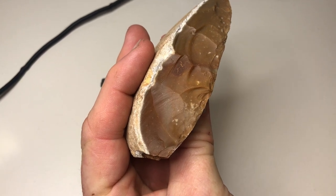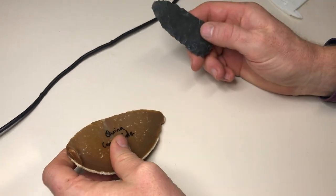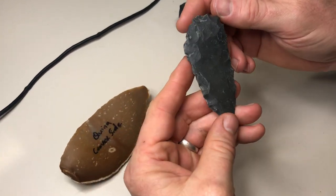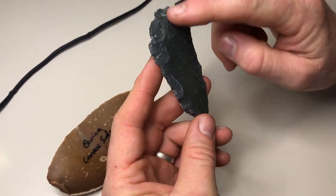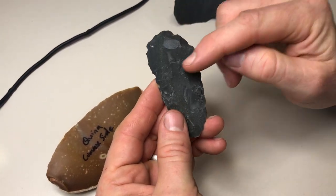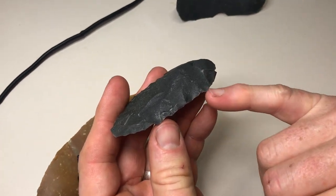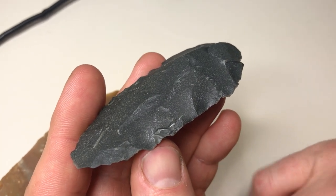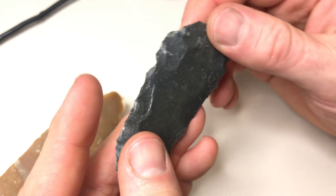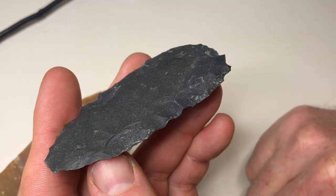So that's unifacial dorsal retouch, whereas bifacial retouch looks like this. Here we've got the ventral surface and we've got retouch coming onto the ventral as well as onto the dorsal. Once again we can see little initiations in places along the edge indicating that that's dorsal retouch, and on the ventral surface if we look carefully along there we can see those initiations again.